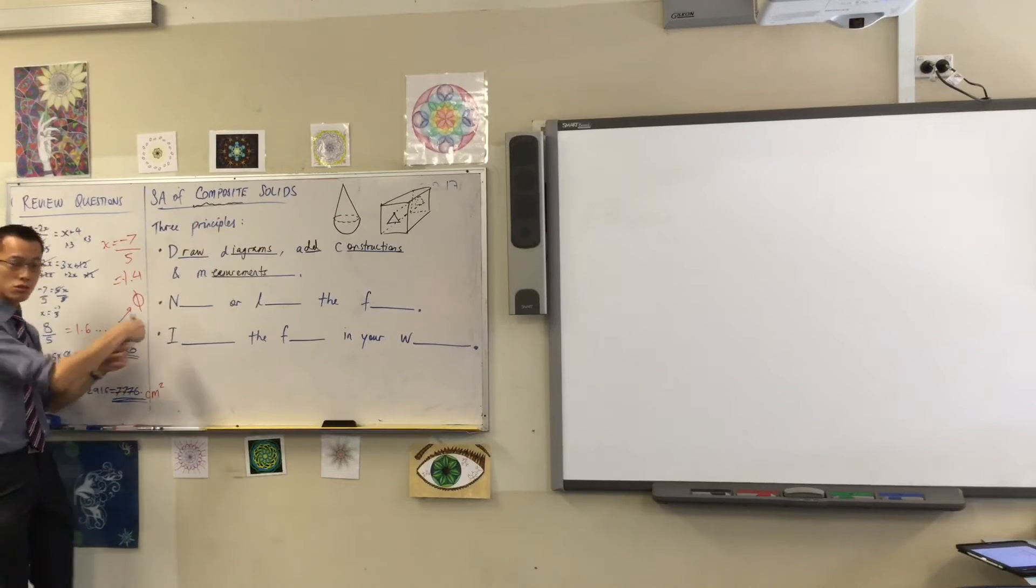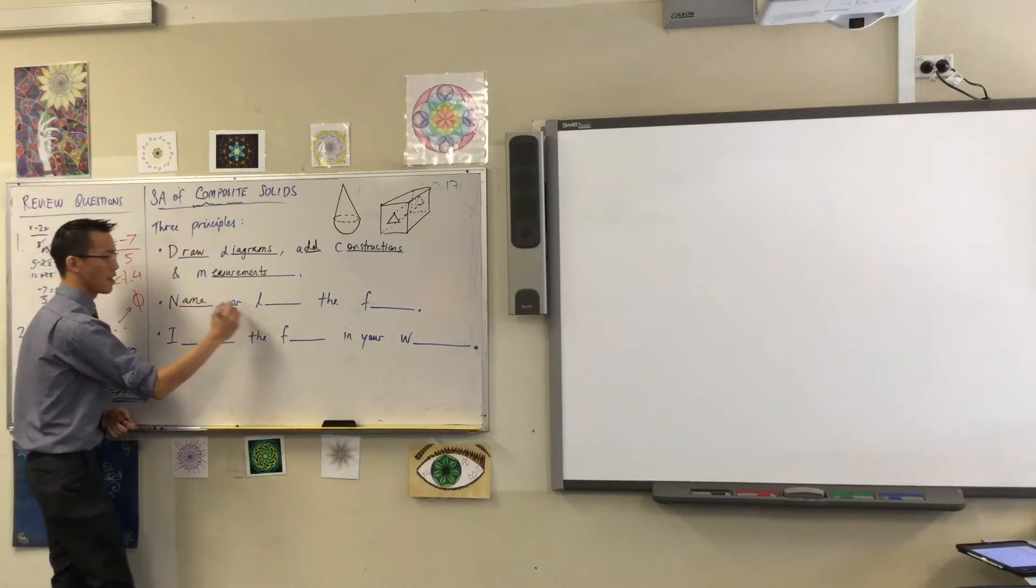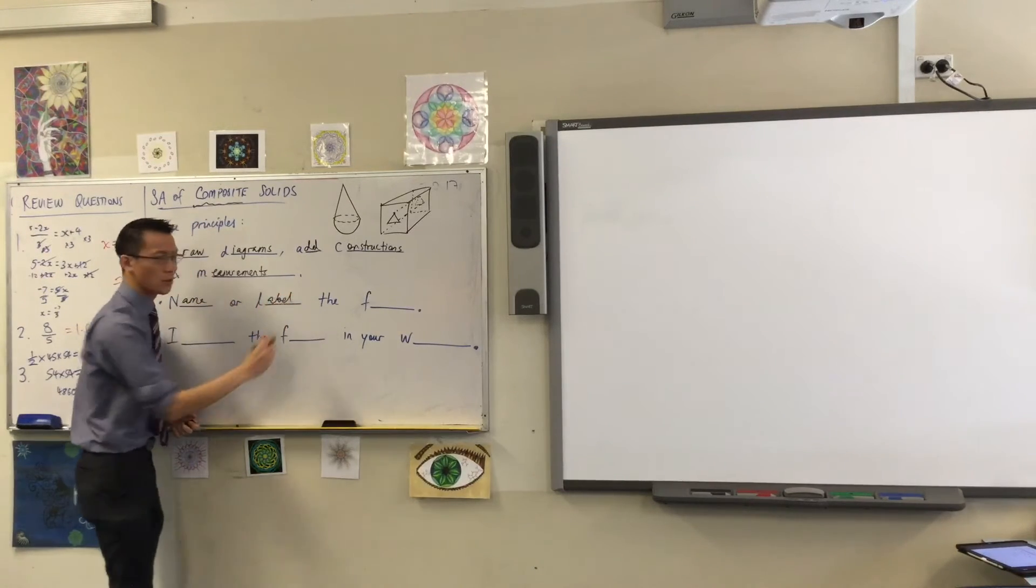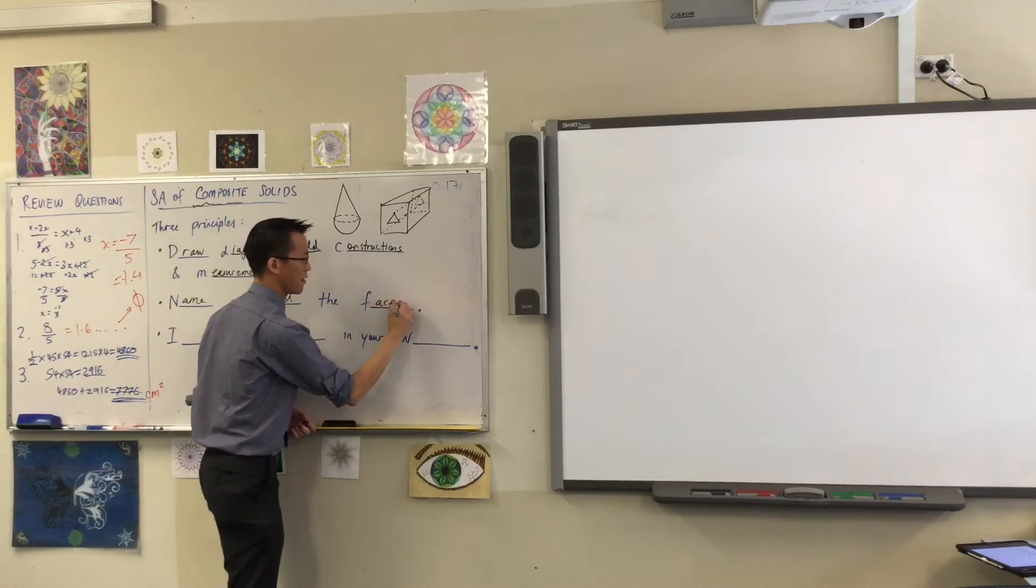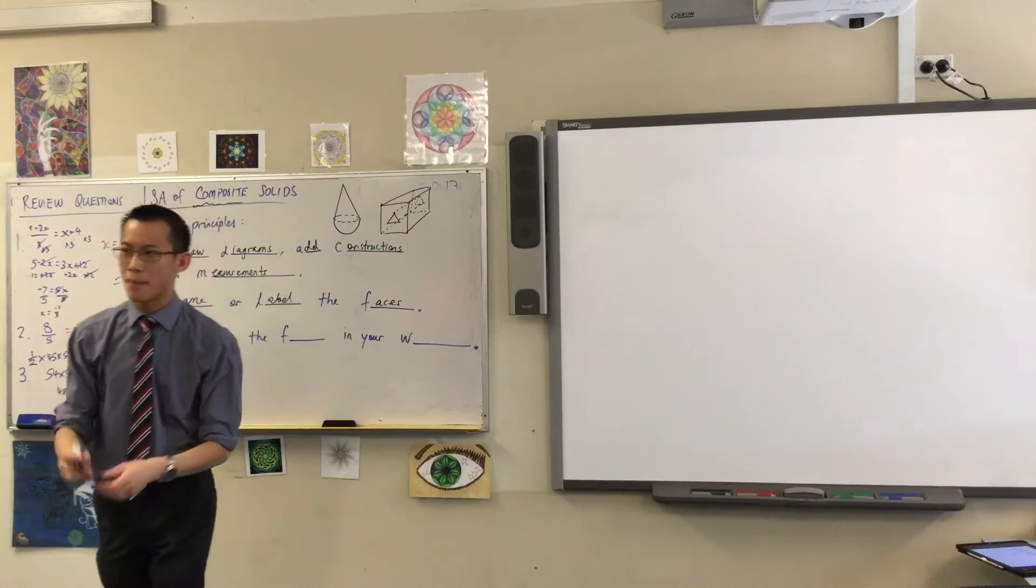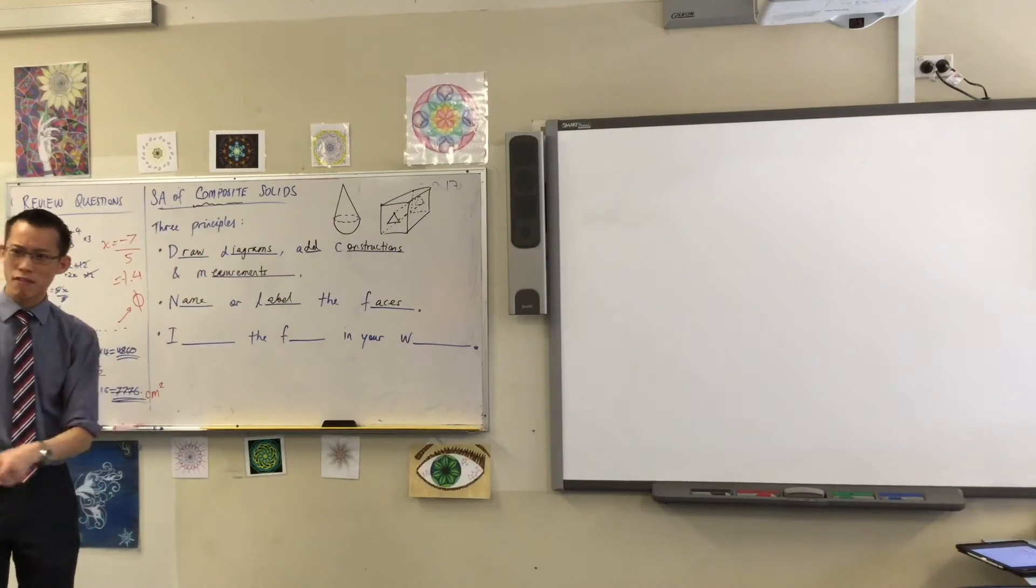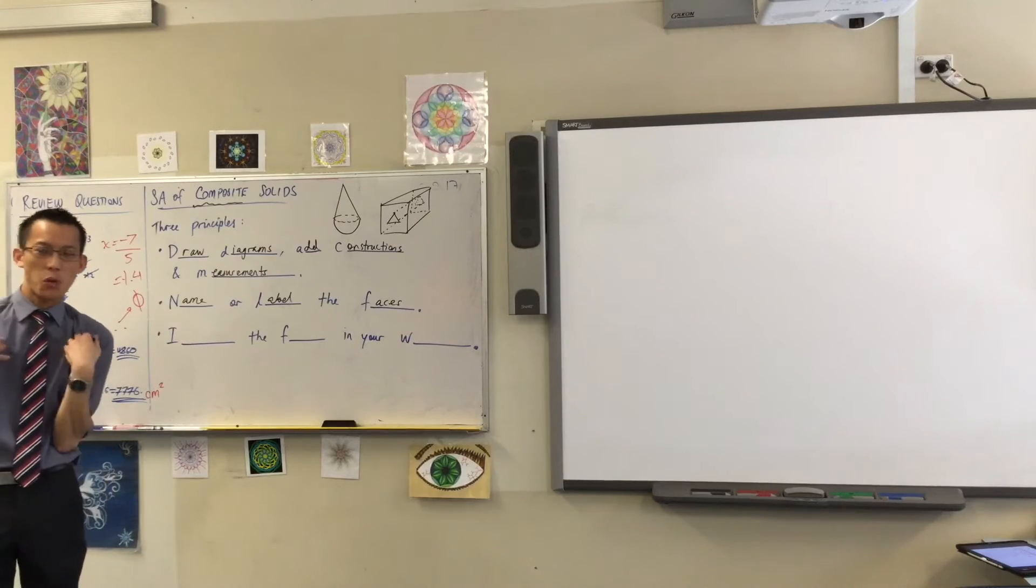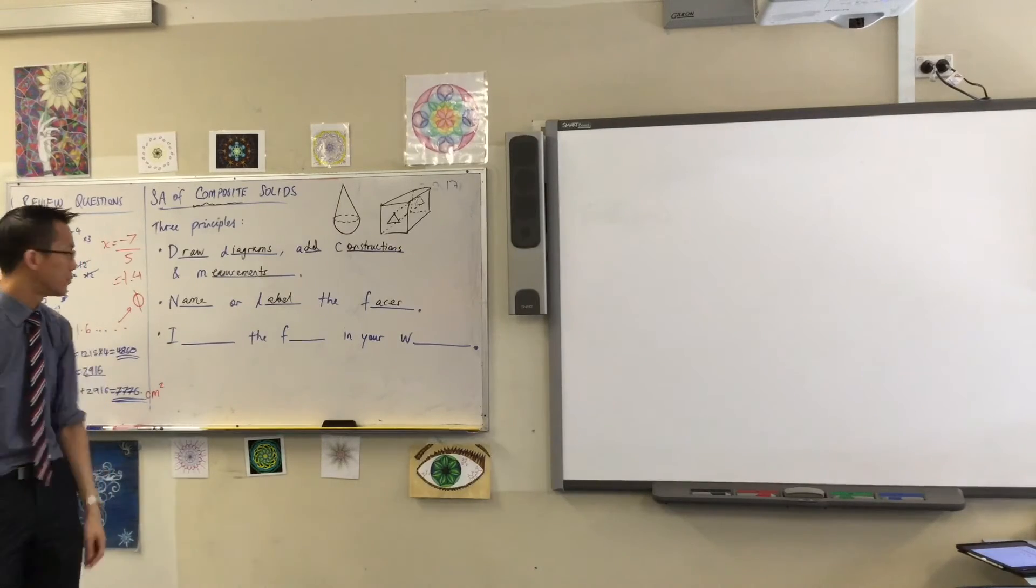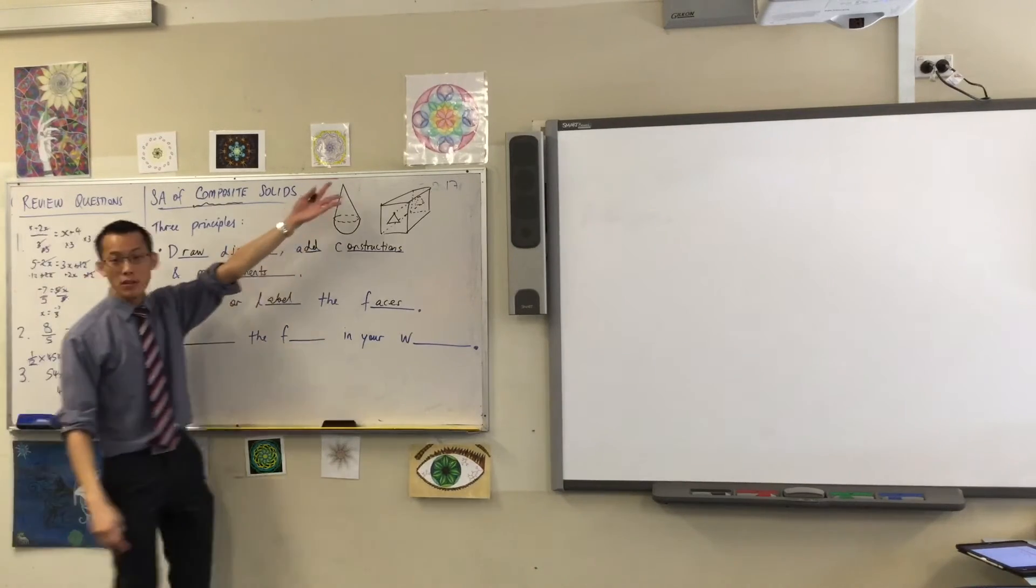So therefore, on your diagram, you should name or label, what do we call those things that I was working at? The faces, right? Because that enables you to actually talk about what they are and have them in your working, rather than just like a series of equations that may give you the right number, but I don't know what they're talking about. I don't know what they're referring to. So name or label the faces and do it on your diagram.